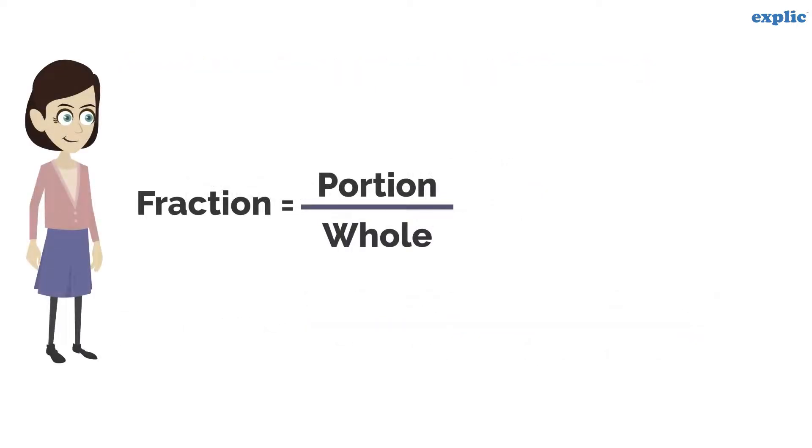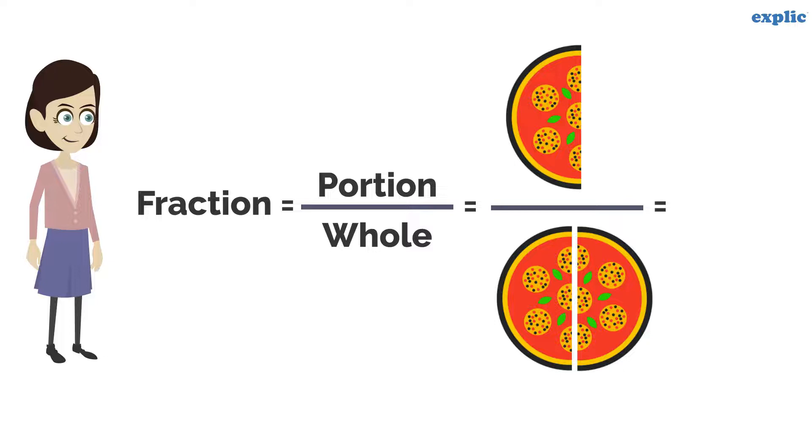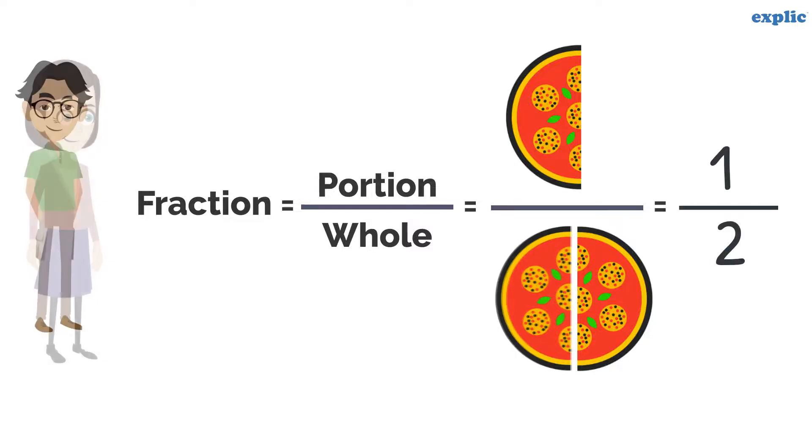Therefore, the fraction of pizza Shreya got is 1 by 2, because she got one slice and the total number of slices are 2. Sameer also got the same fraction of pizza.